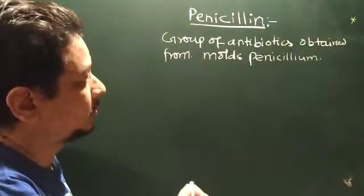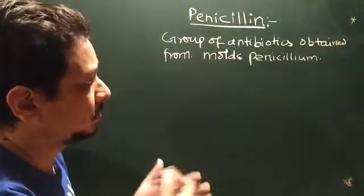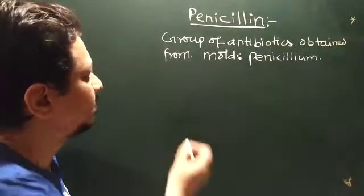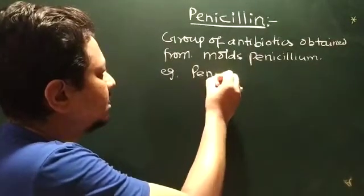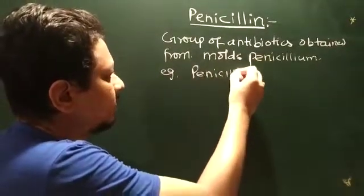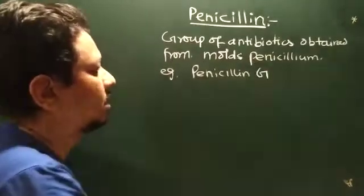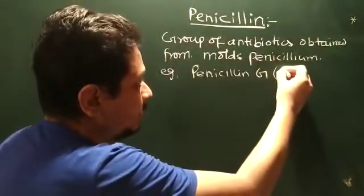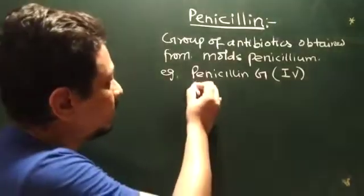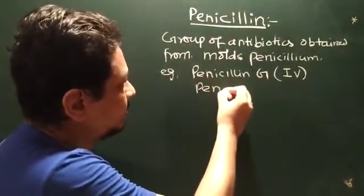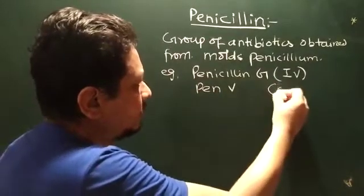Now, that is a common definition of penicillin. For example, you have a natural penicillin, penicillin G, but it is given in intravenous form, it is not given orally, whereas penicillin V is given orally.